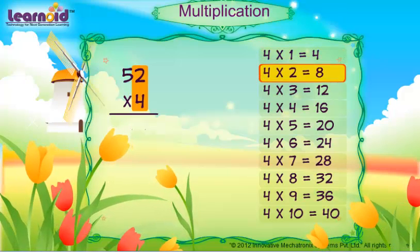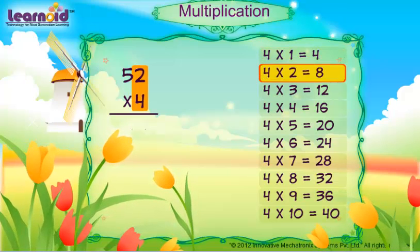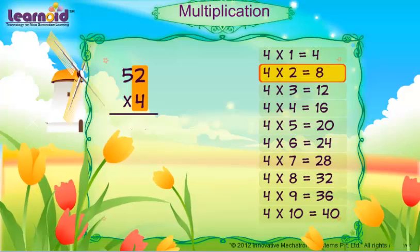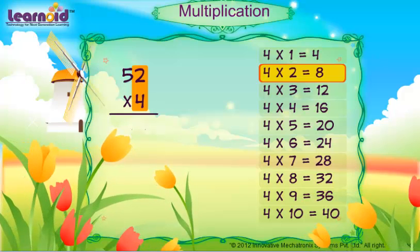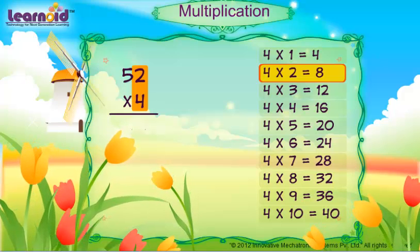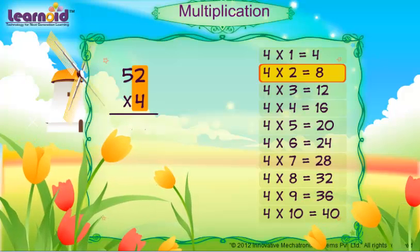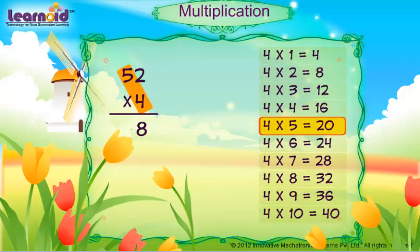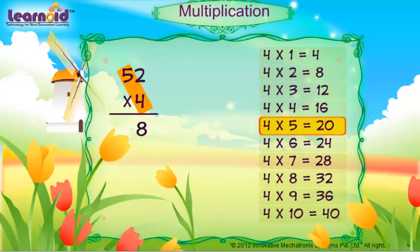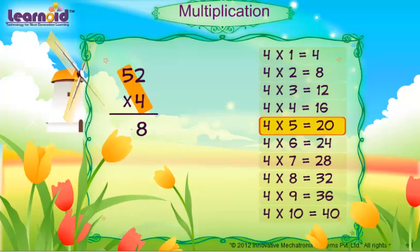First, multiply 2 with 4. 4 into 2 is 8. Write 8. 4 into 5 is 20. Write 20.